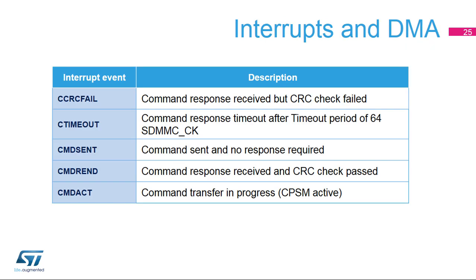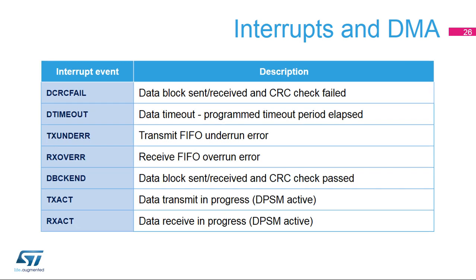SDIO interrupts are sent from the card to the SDMMC host when the card detects an external event. The SDMMC host detects interrupts sent on the SDMMC-D1 pin once the SDIOEN configuration bit in the data control register is enabled. While the DPSM remains in idle state, all low levels on the SDMMC-D1 pin are detected as interrupts from the card to the host. Here is an overview of interrupt events. This slide shows events related to the command path state machine. This is the list of flags for the data path state machine with events related to the transfer direction and transfer status.